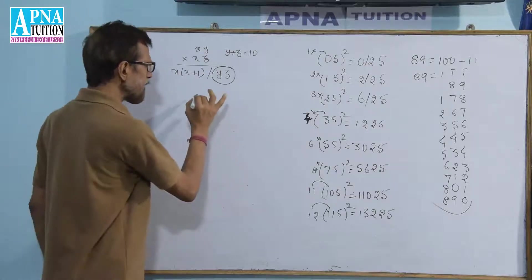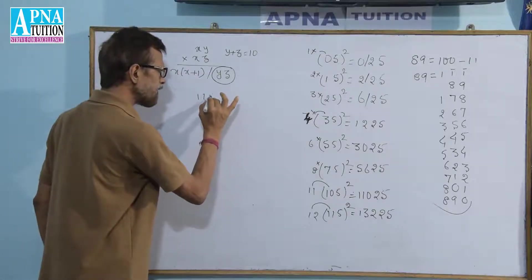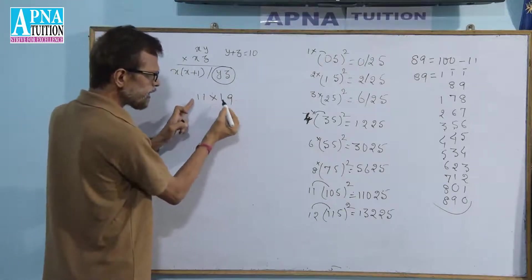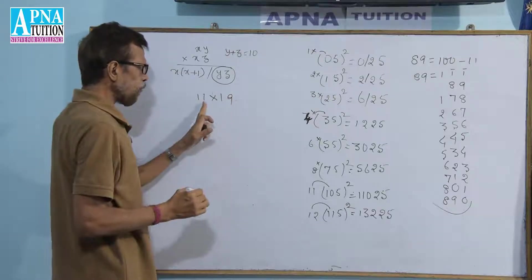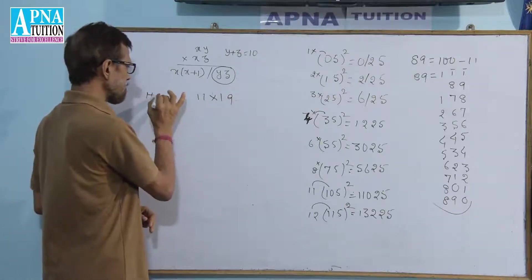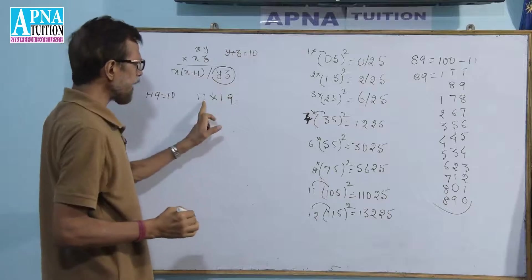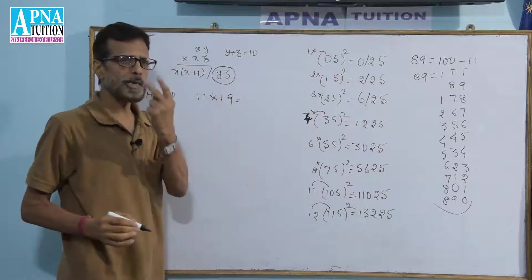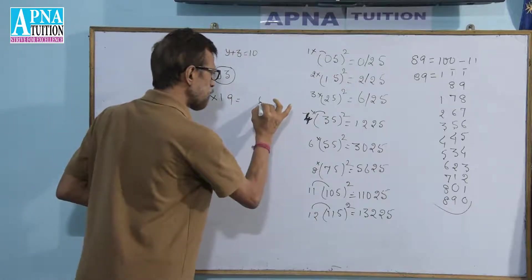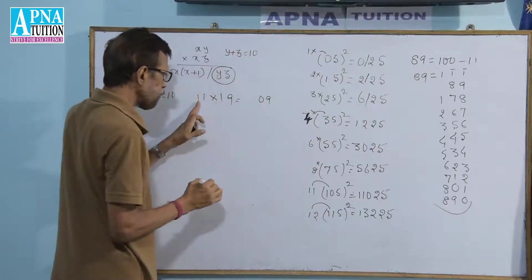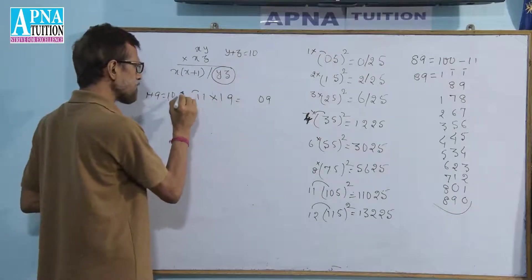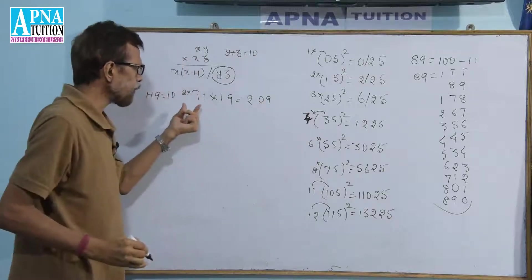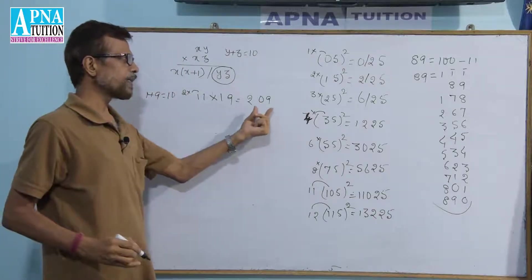For example, 11 × 19: the tens digits are both 1, and 1 + 9 = 10, so the condition holds. 1 × 9 = 9, written as 2 digits: 09. Then 1 × 2 = 2. So the product of 11 and 19 is 209.